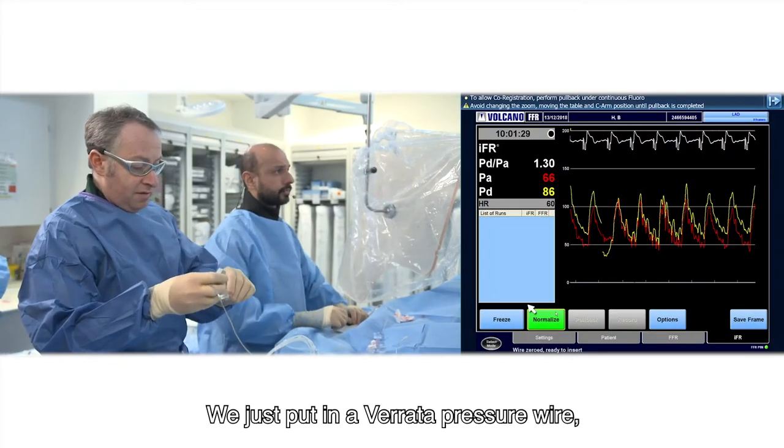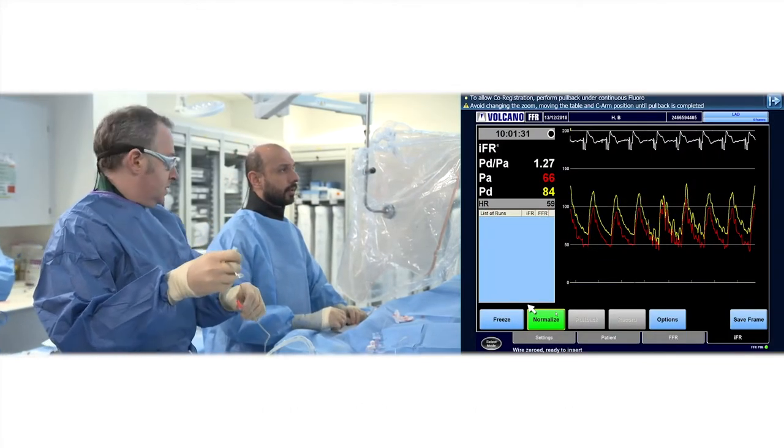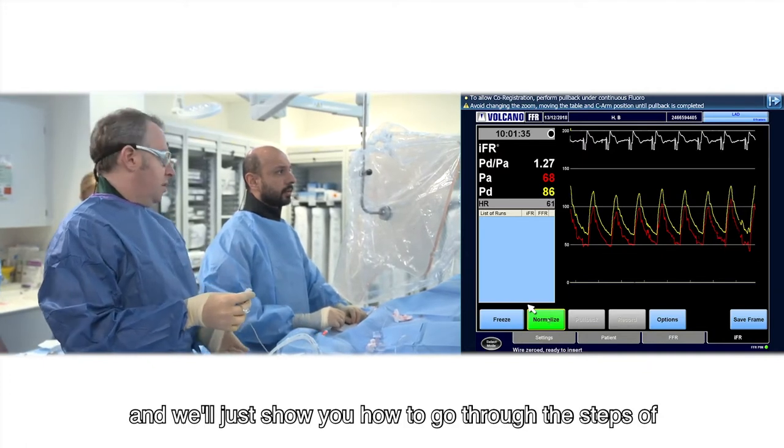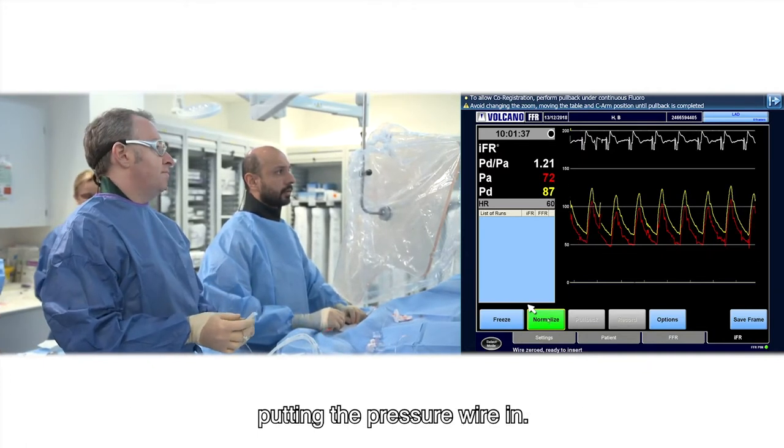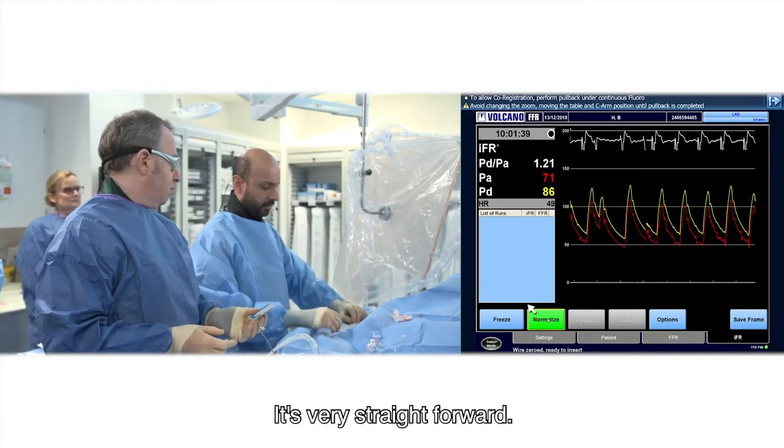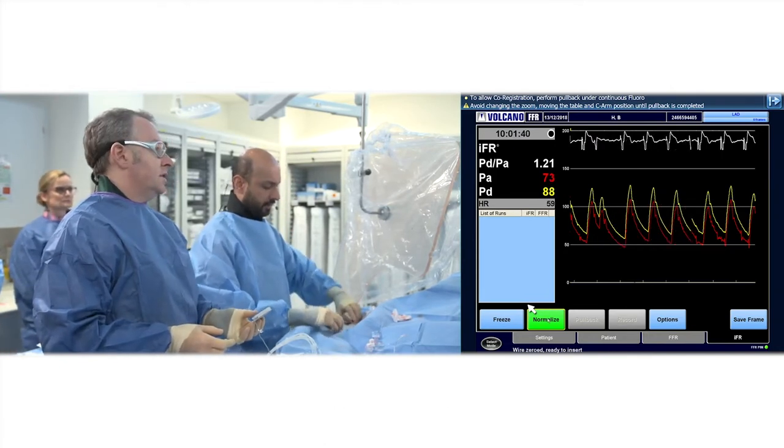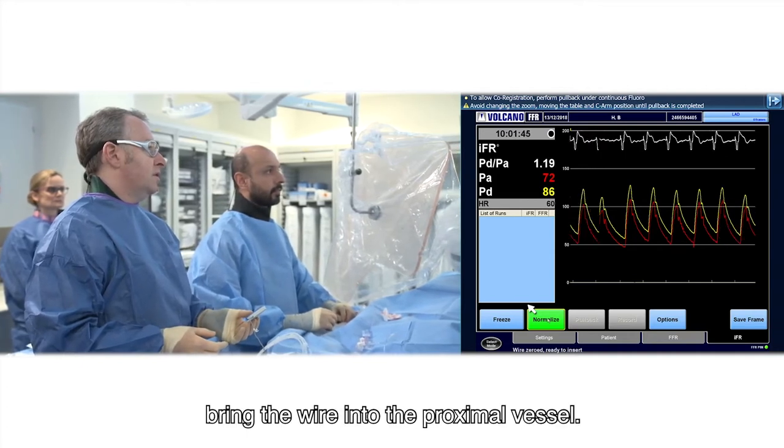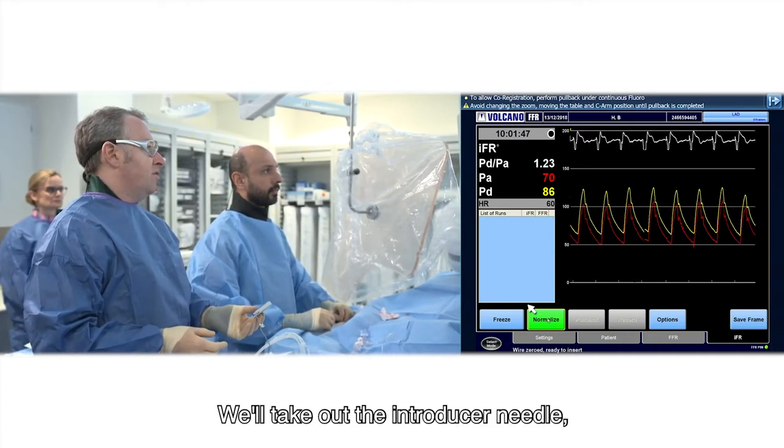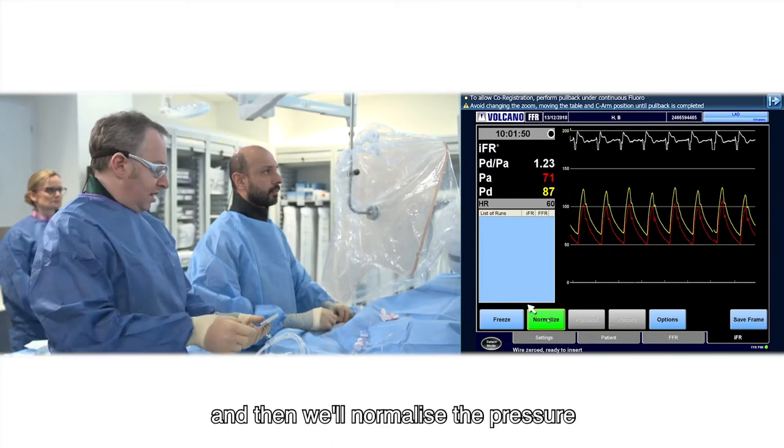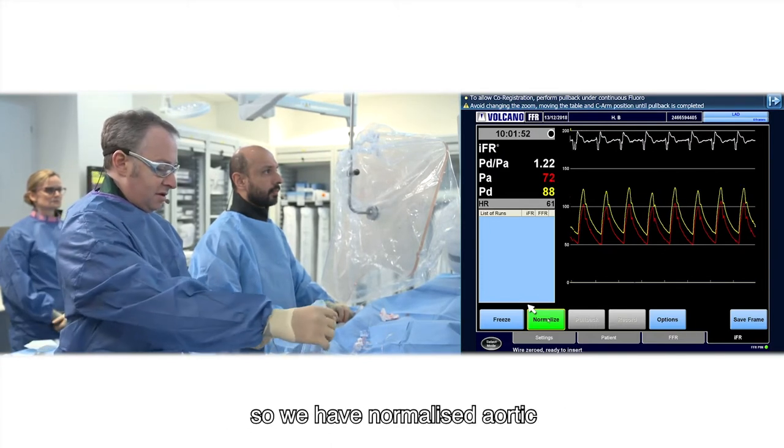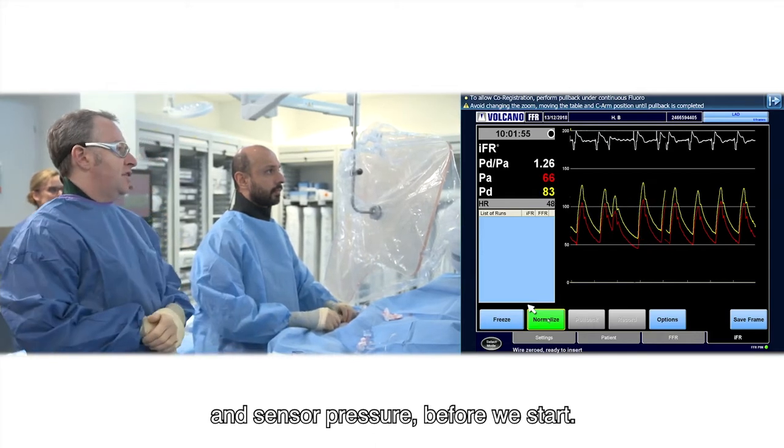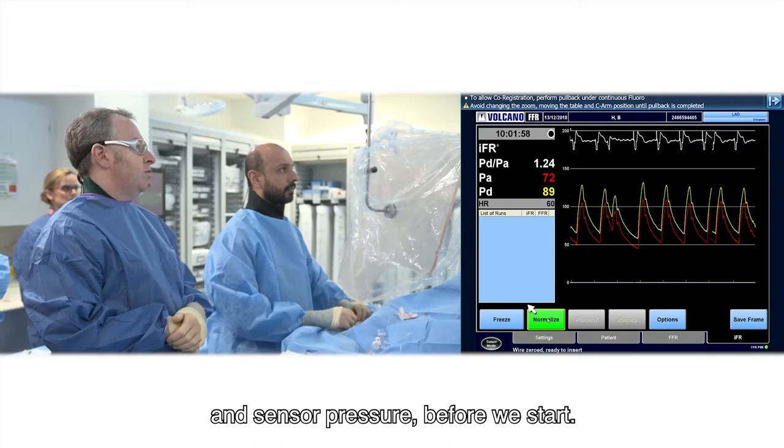We'll just put in a Verato pressure wire and show you how to go through the steps of putting the pressure wire in. It's very straightforward. So what we'll do is bring the wire into the proximal vessel, take out the introducer needle, and then normalize the pressure so we have normalized aortic and sensor pressure before we start.